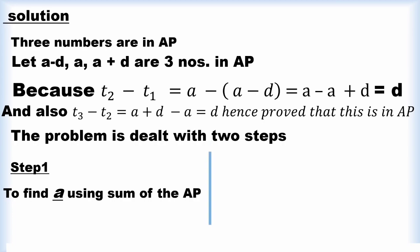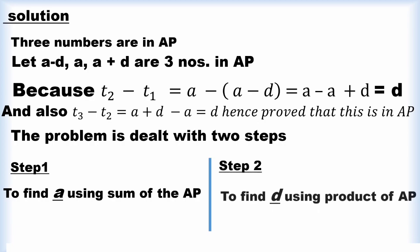The problem is dealt with in two steps. First, we have to find out what is 'a' using the sum of the AP. Next, we have to find 'd' using the product of the AP, which is 288.